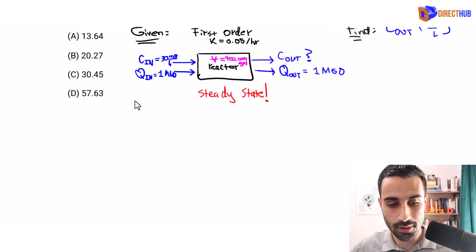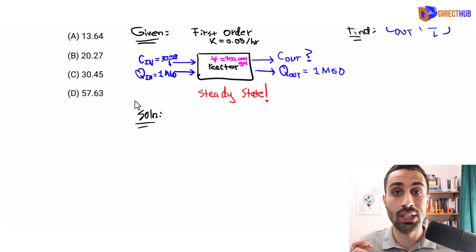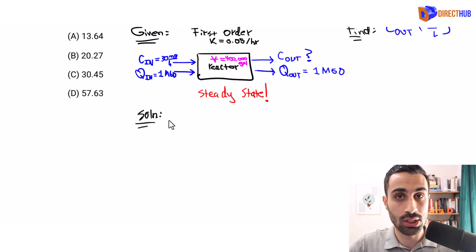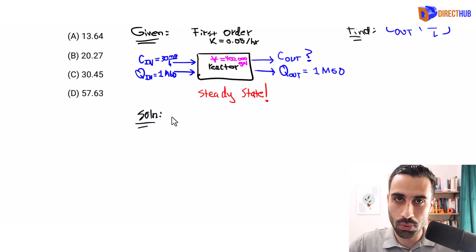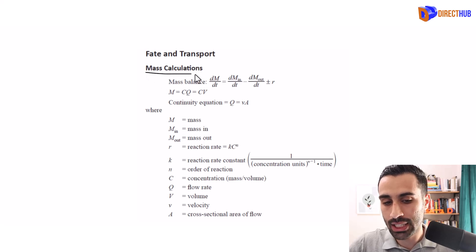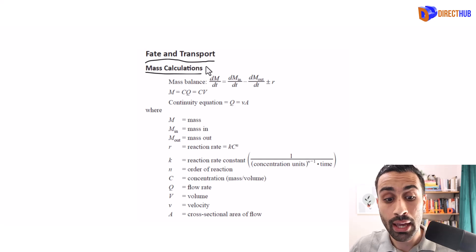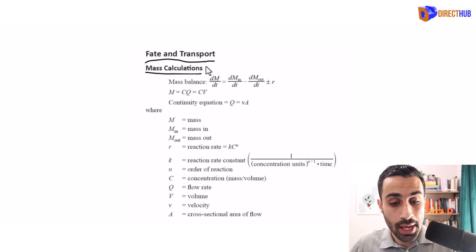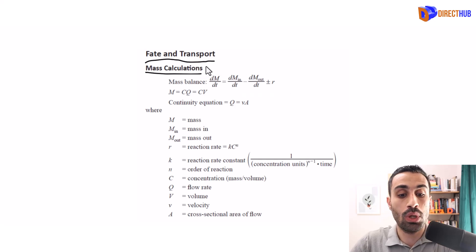What do we apply here? This is a fundamental concept we must know as civil and environmental engineers: conservation of mass applied to our wastewater systems. Under mass calculations, fate and transport — this is the environmental section — we apply a mass balance, also called conservation of mass.